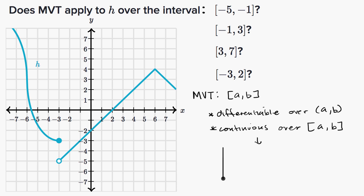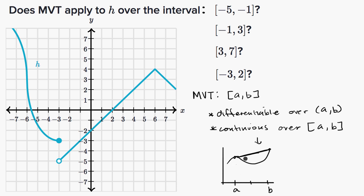I'll just visually draw it as a review. Let's say our function looks like this, with a on the left and b on the right, and we meet these conditions over this interval. The mean value theorem tells us there's going to be some value c in the interval where the derivative at c equals the average rate of change from a to b — the slope of the secant line. You can see visually that at some point the slope of the tangent line would be the same, and that would be the c that exists.